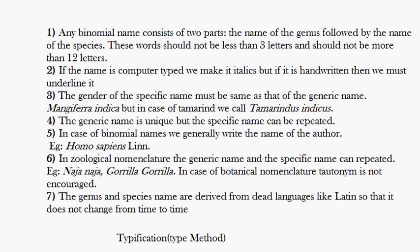You cannot find a binomial name — whether the genus or the species — where the name is less than 3 letters or more than 12 letters. If you can find some, tell me about it in the comments.